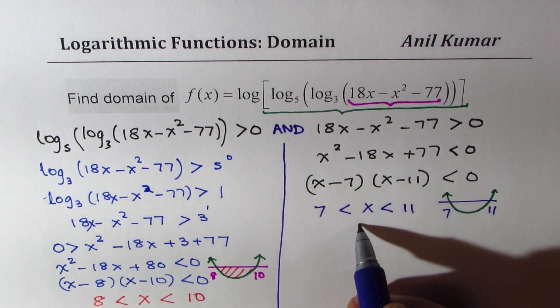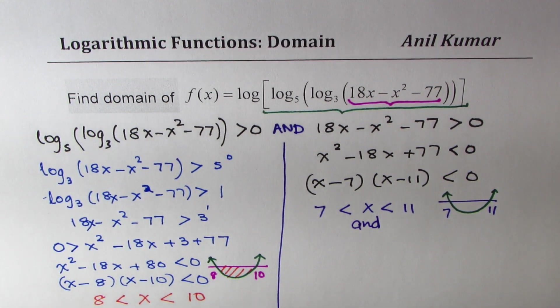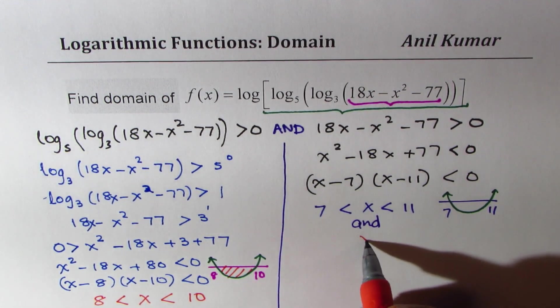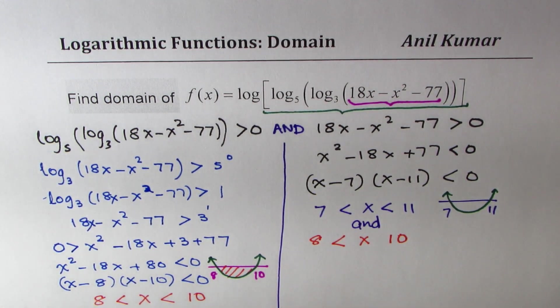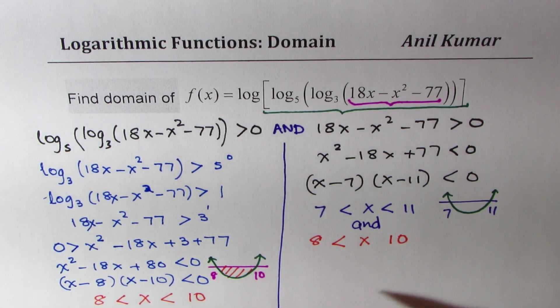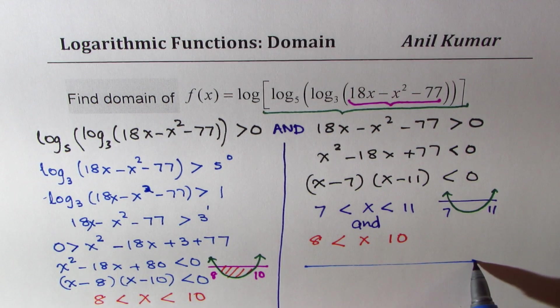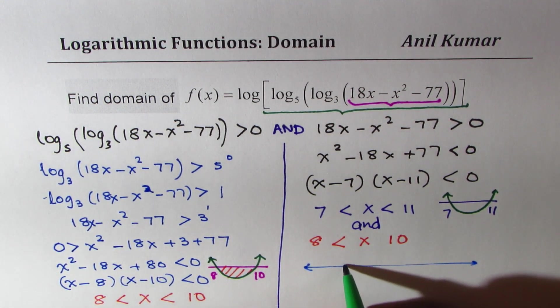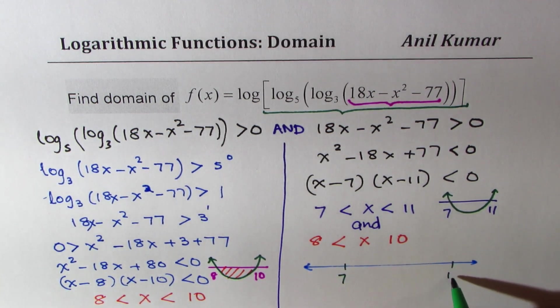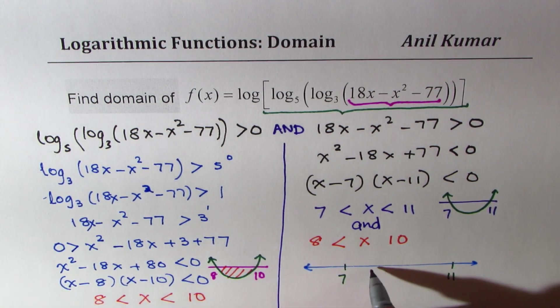So we have two conditions: one is x between 8 and 10, and the other is x between 7 and 11. What is the answer now? Let us see on a number line both solutions, and then we'll take the AND of this. Just to make it clear, we're looking for one domain from 7 to 11 and the other from 8 to 10.